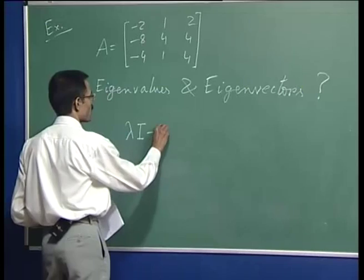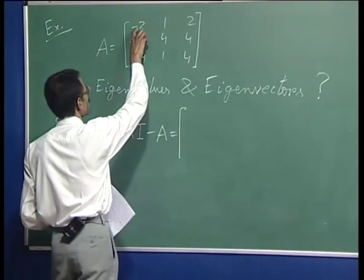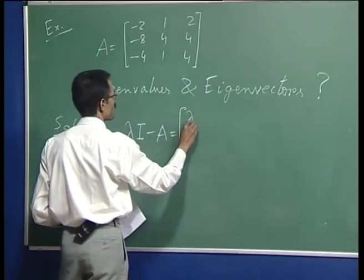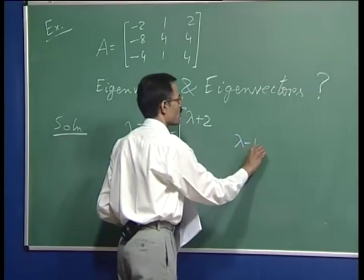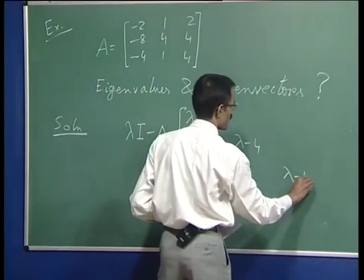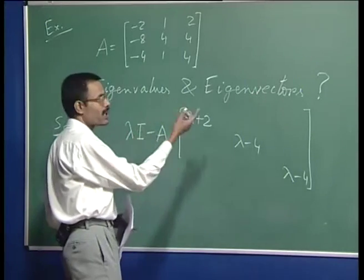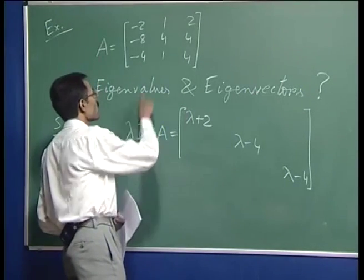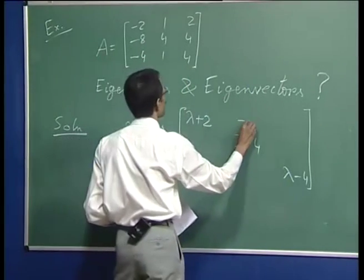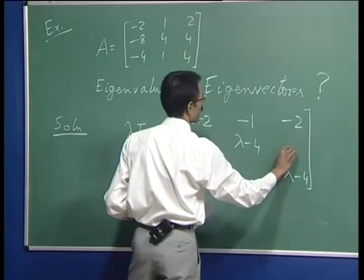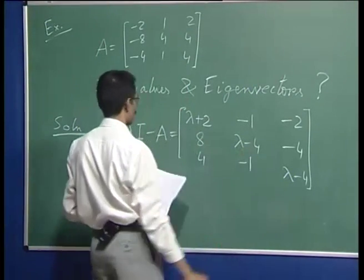Lambda I minus A will be lambda minus (minus 2), that is lambda plus 2, then lambda minus 4, then lambda minus 4, and on the off-diagonal elements there will be no effect of this — these will just become negative.